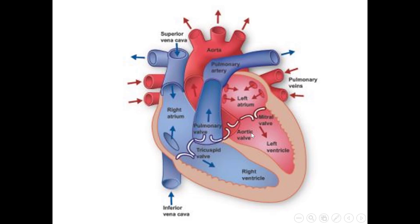Now we will discuss the circulation of blood in the heart. In the right atrium there are two main veins opening. The upper vein is called the superior vena cava, and the vein coming from below is called the inferior vena cava. These veins open in the right atrium. The superior vena cava brings deoxygenated blood from the upper half of the body, and the inferior vena cava drains deoxygenated blood from the lower half of the body, collecting it in the right atrium.